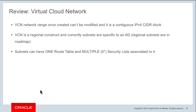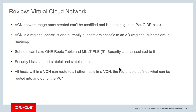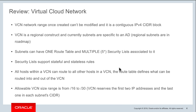Subnets can have one route table, but multiple security lists can be associated to it. Security lists can be both stateful and stateless. All hosts within a VCN can route to all other hosts without needing a specific route table entry — route table entries are only for destinations outside the VCN. The allowed CIDR range for a VCN is /16 to /30, and the first two IP addresses and the last one in each subnet CIDR are reserved by the service itself.